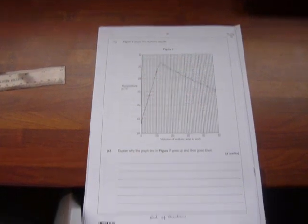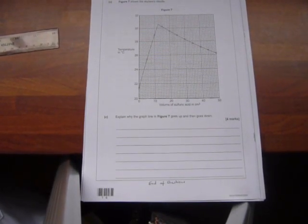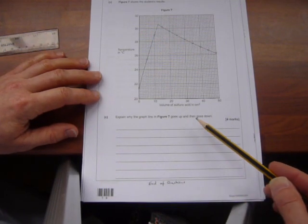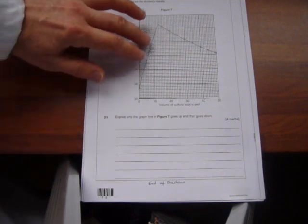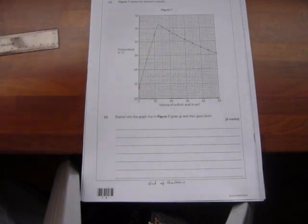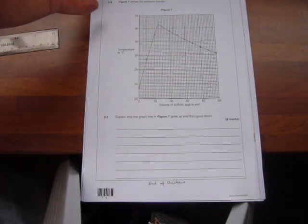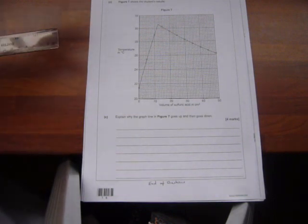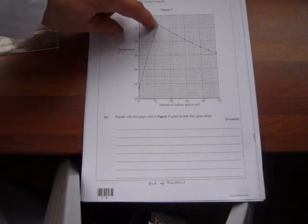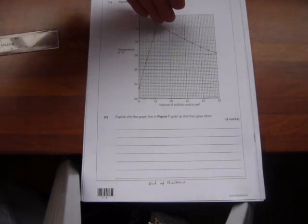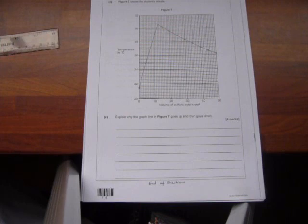And that was actually a four-mark question. Explain why the graph in figure seven goes up and then down. Two marks for why it goes up, because the sulfuric acid is reacting with the sodium hydroxide, and it's an exothermic reaction, so the more sulfuric acid you add, the more energy is released. And then, once all the sodium hydroxide has been used up, any extra sulfuric acid simply cools the mixture down. Four marks, a good four marks for you to score.